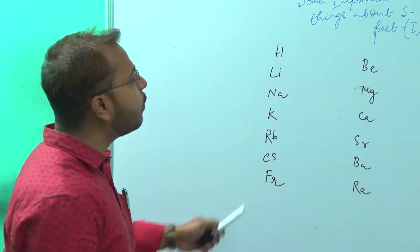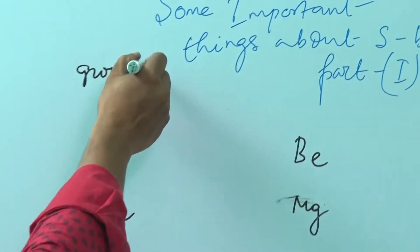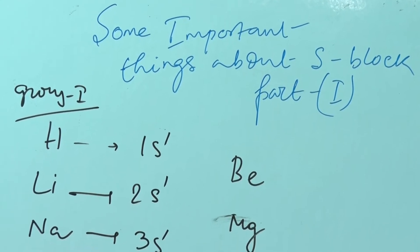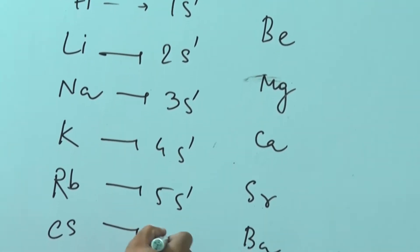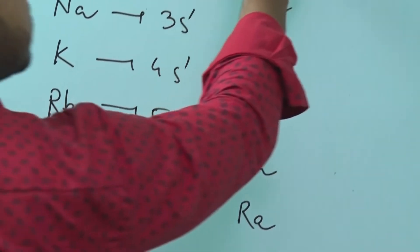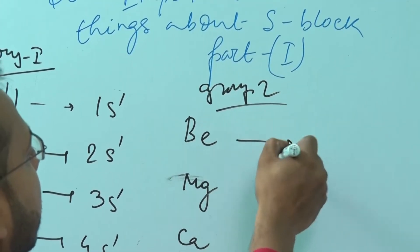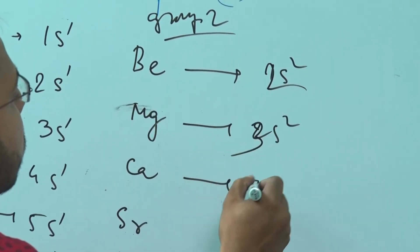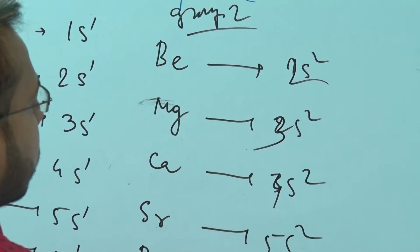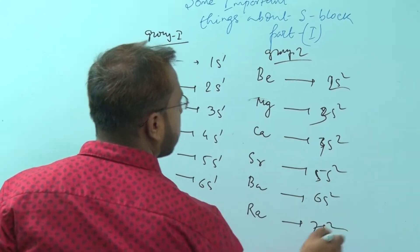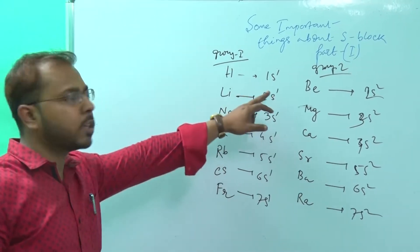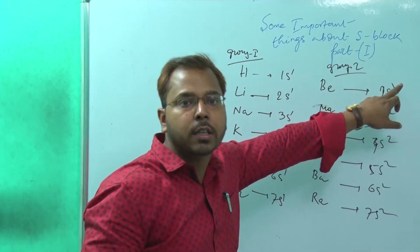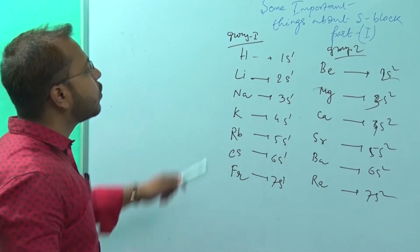S-block consists of Group 1 and Group 2. Group 1 is known as alkali metals. It is called Group 1 because it has valence shell configurations 1s1, 2s1, 3s1, 4s1, 5s1, 6s1, and 7s1. Group 2 has valence electrons 2s2, 3s2, 4s2, 5s2, 6s2, and 7s2. So in the valence shell of Group 1, only one electron is present, and in Group 2, only two electrons are present.